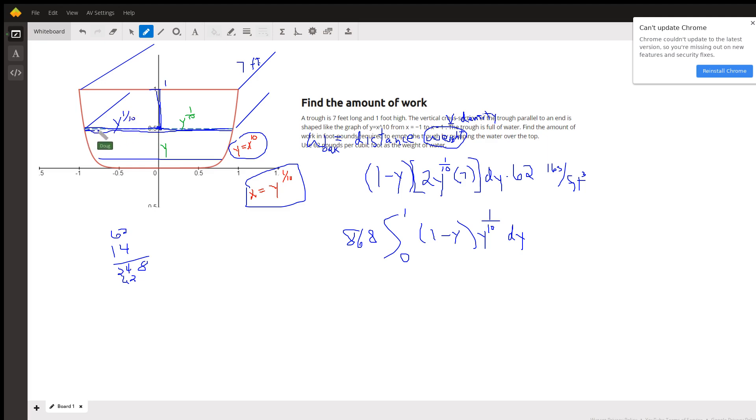If you think of this as a rectangular solid with a very small height dy, the width of that slice is two times y to the 1/10th, the length is seven feet to go to the other end of the trough, and dy represents the thickness.